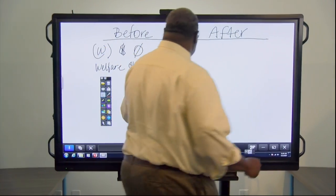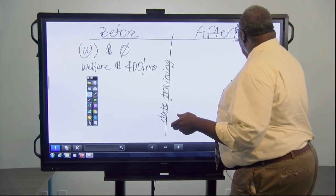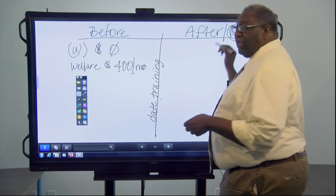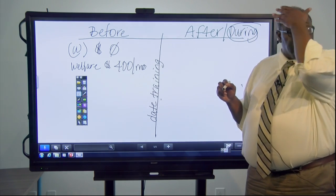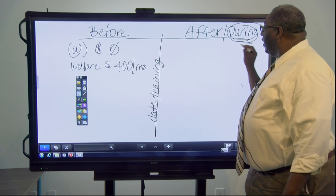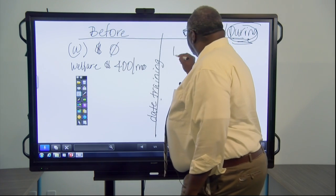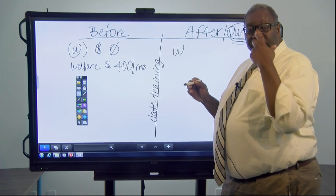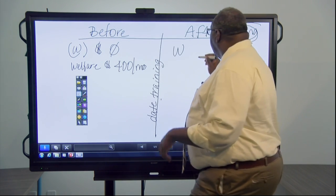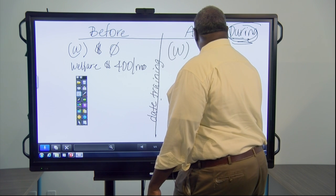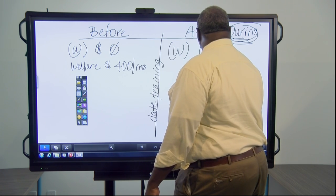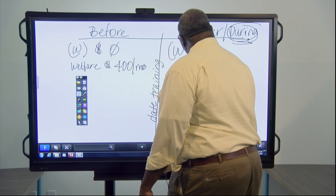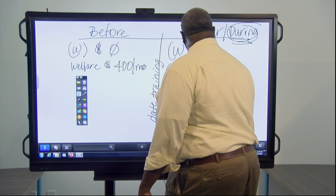Now, after this date, which is another way of saying during the training—this only benefits them while they're in training. So during the training, they're getting paid to participate in this training program. For work, they get $600, and for welfare, they get zero.